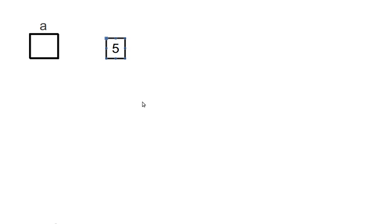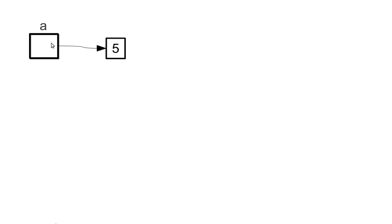More complex objects might have more inside of them, but this is a fairly simple object. When we say that a equals 5, we are drawing a connection from a and making it reference the object 5. The difference between a val and a var is that in a val, you can't move this arrow. And in a var, you can.